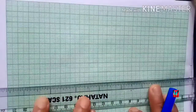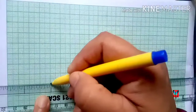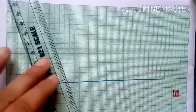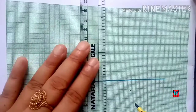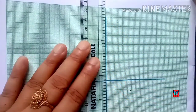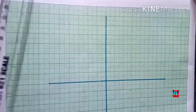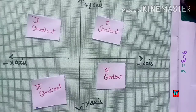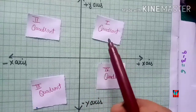First, let's draw the axes. The horizontal line is called the x-axis, and the vertical line is called the y-axis. Together they form the coordinate plane or Cartesian plane, with a positive x-axis, negative x-axis, positive y-axis, and negative y-axis.